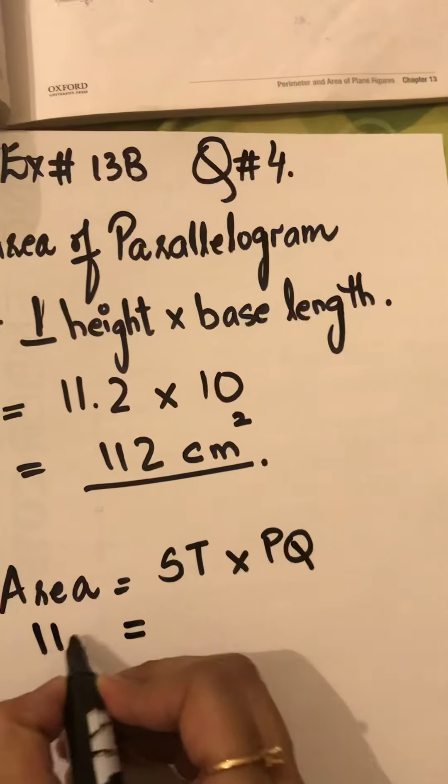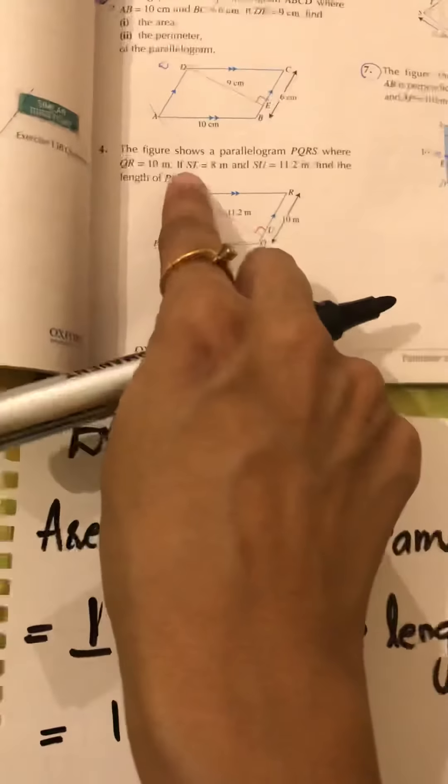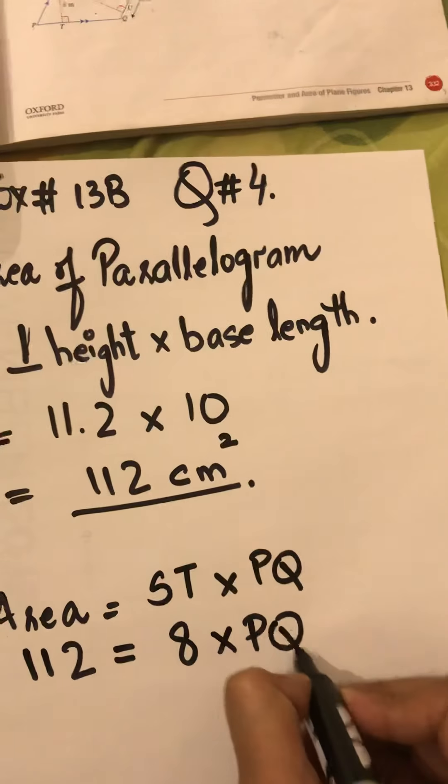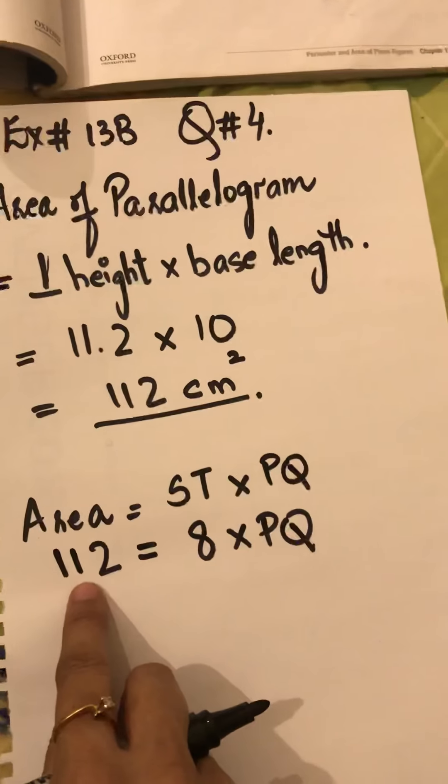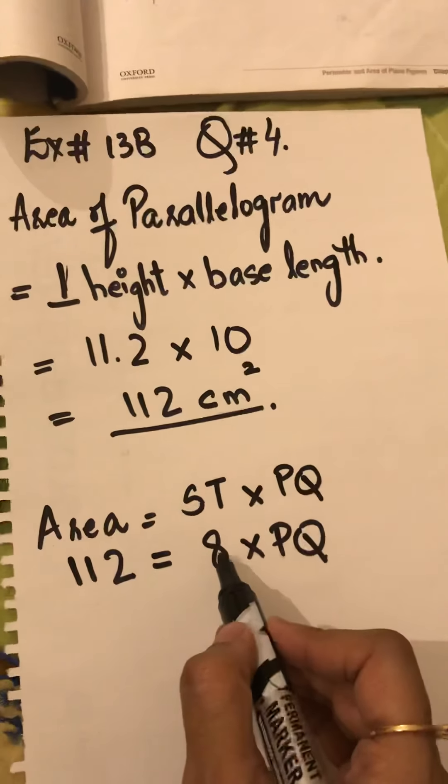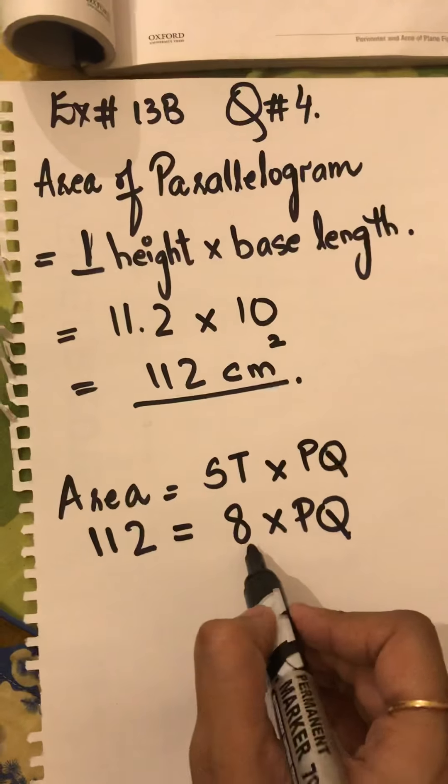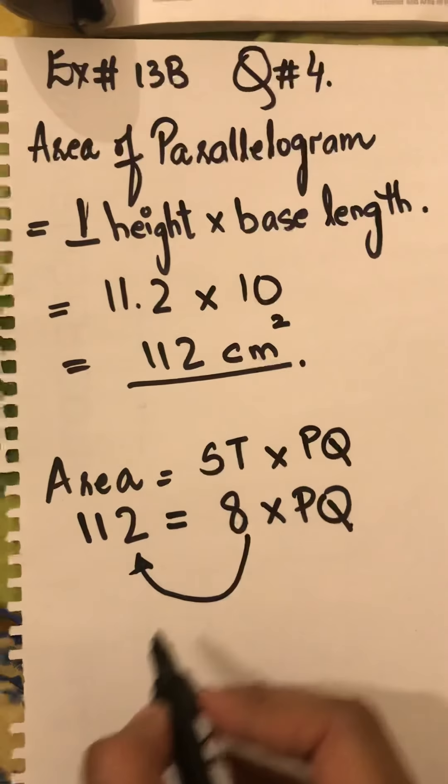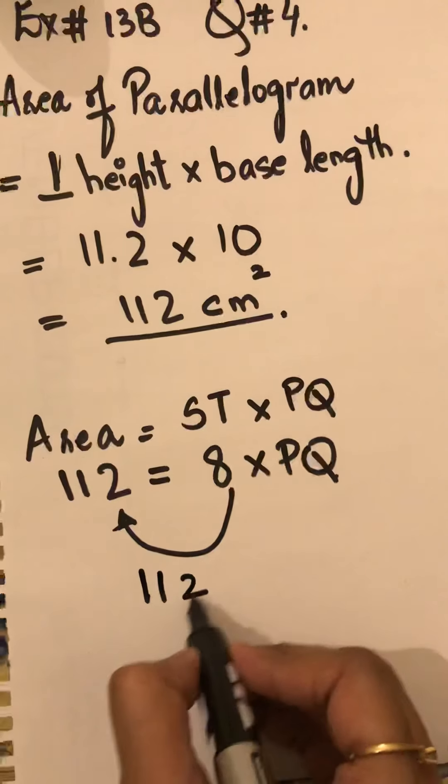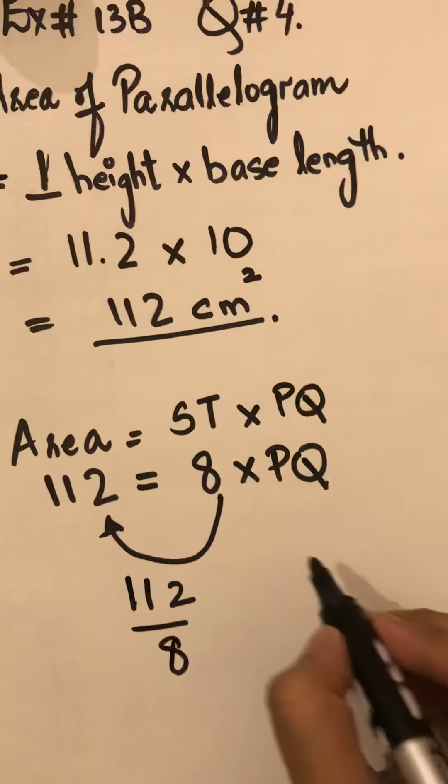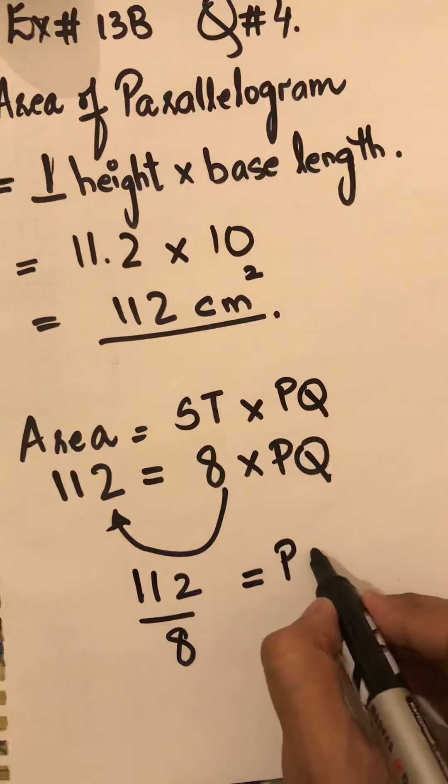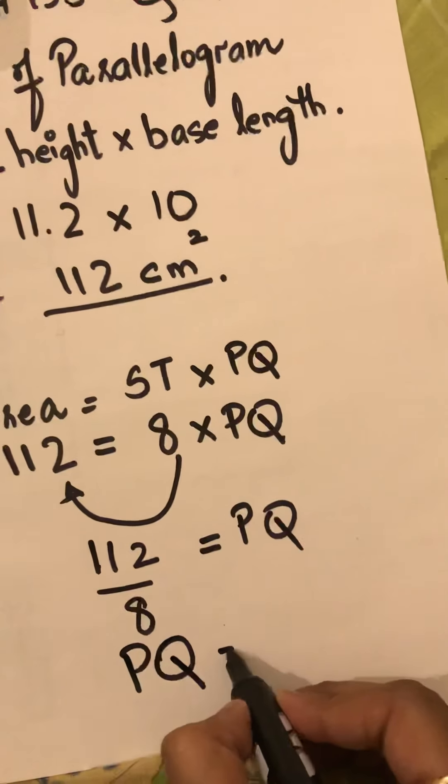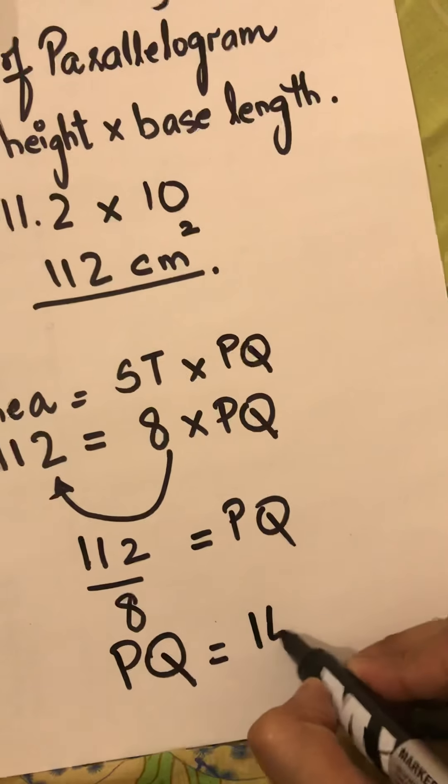As the area is 112, ST is 8 multiplied by PQ. Now we have substituted all of this. As 8 is multiplying over here, we are going to shift 8 to the other hand side of the equals. If 8 is multiplying, on the other hand side 8 is going to divide. Therefore, PQ is equals to 112 divided by 8, which is 14.